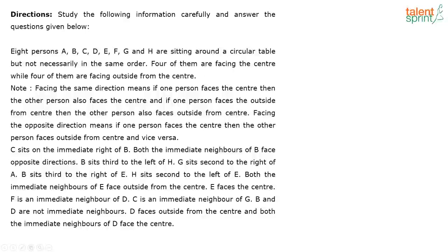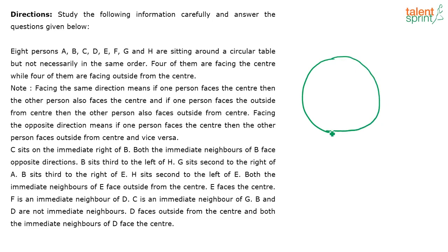The last question for today's session is on your screen. Eight persons A, B, C, D, E, F, G and H are sitting around a circular table but not necessarily in the same order. Four of them are facing the center and four of them are facing away from the center.